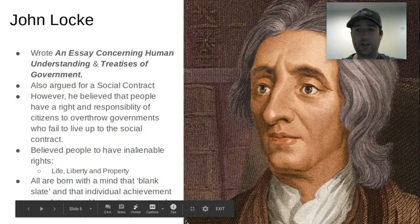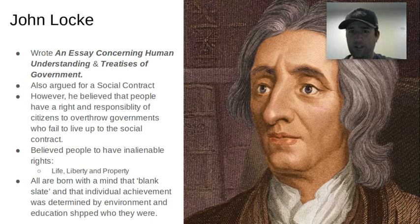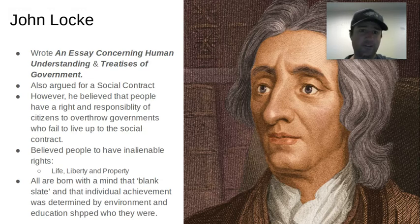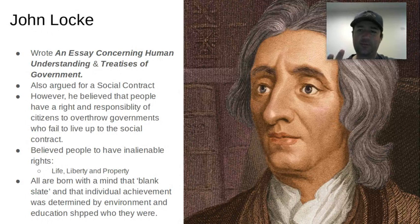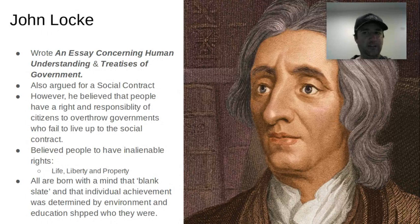Hobbes is not the only one — there's also John Locke, who wrote An Essay Concerning Human Understanding and the Two Treatises of Government, both highly influential works. He also argues for the social contract, but his beliefs vary from Hobbes. Locke believes that people have a right and a responsibility to overthrow or change governments when the government fails to live up to that social contract.